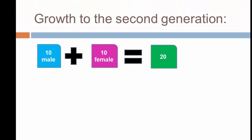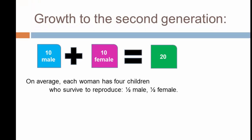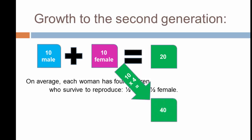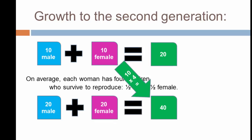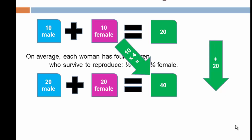Here's our map of this: the first generation, 10 plus 10 is 20. On average each woman has four children who make it to adulthood, and we assume they all survive to reproduce, with offspring that are half male and half female. We take the 10 women and multiply by four to get the population in the next generation: 40, half male and half female. The increase from generation one to generation two is 20 individuals.